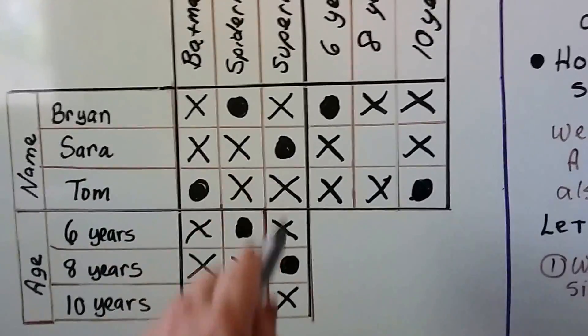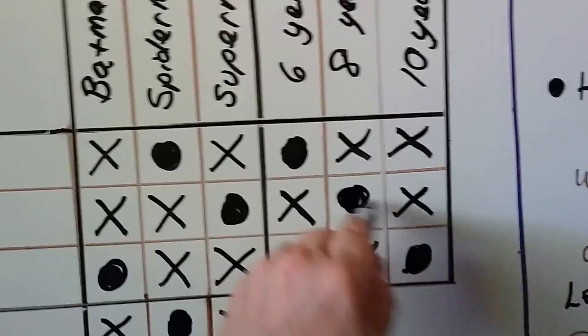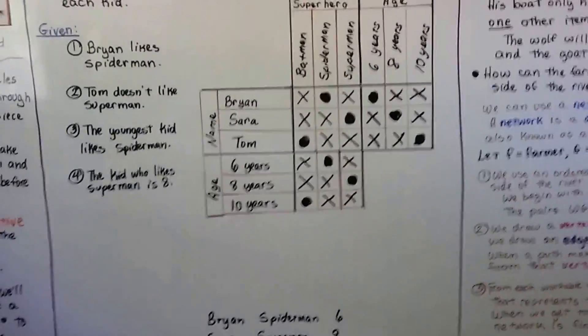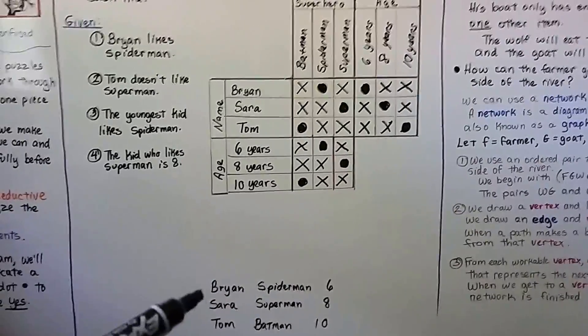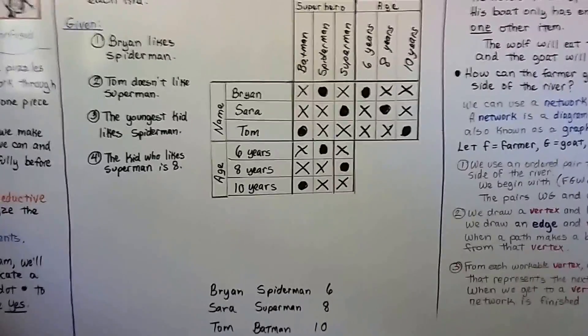Which means Sarah must be eight. So now we've got the whole grid filled out. We know the name, age, and favorite superhero for each kid. Brian is Spider-Man, he's six. Sarah is Superman, she's eight. And Tom is Batman, he's ten.